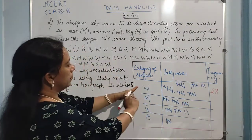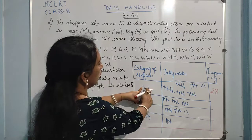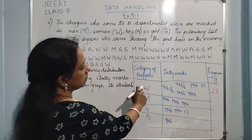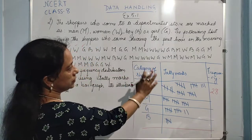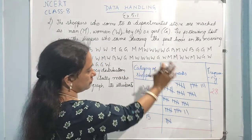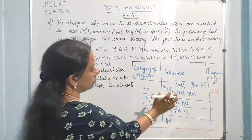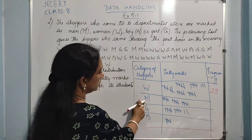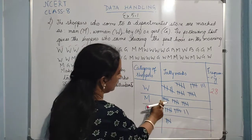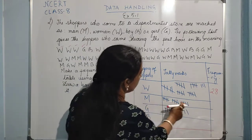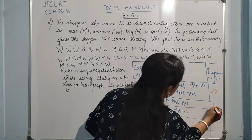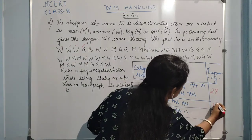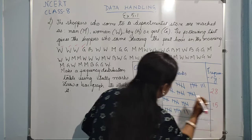The number of women who are visiting the departmental store in the first hour in the morning is twenty-eight. Similarly for men — five, ten, fifteen — so men is fifteen.